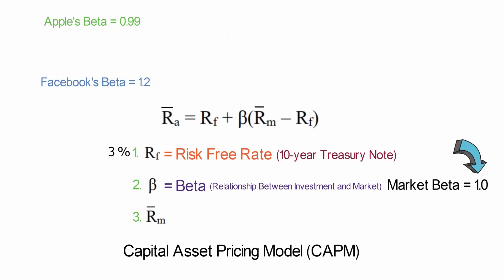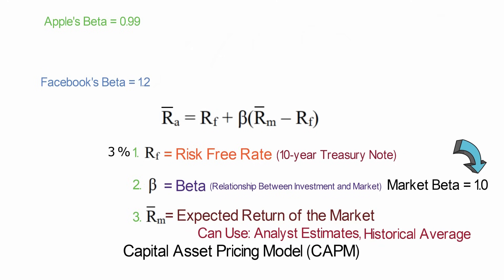The final input in our formula is the expected return of the stock market. Now coming up with this number isn't always clear. Some research companies publish what they expect long-term market returns to be. You could also use a historical average. For our case, we're going to use the average of the past 10 years, which is about 9% per year.